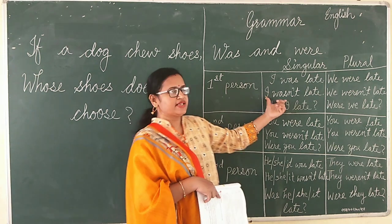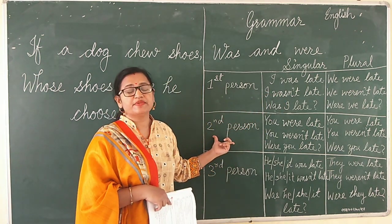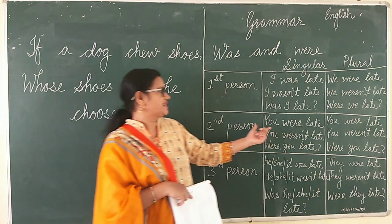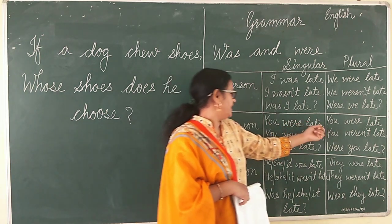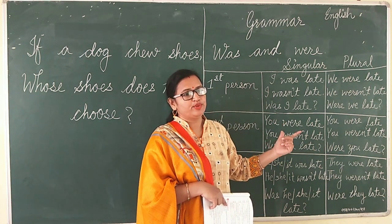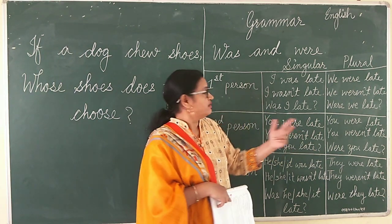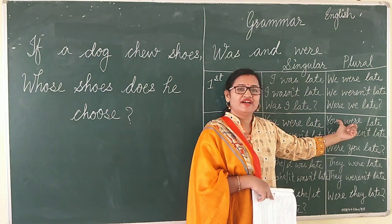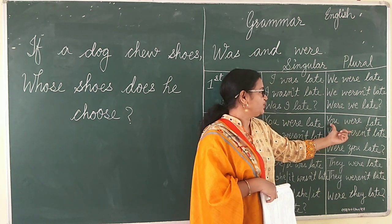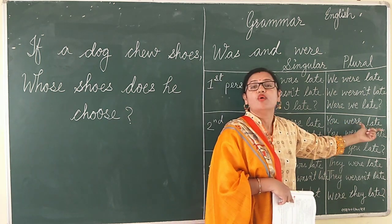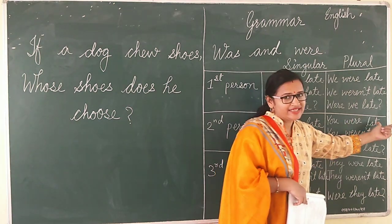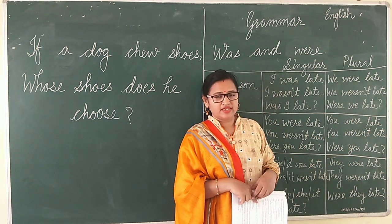Now second person — the listener. It can be singular or plural, but with 'you' we always use 'were'. So: 'You were late'; 'You weren't late'; 'Were you late?' With 'you' — whether singular or plural — we always use 'were'.